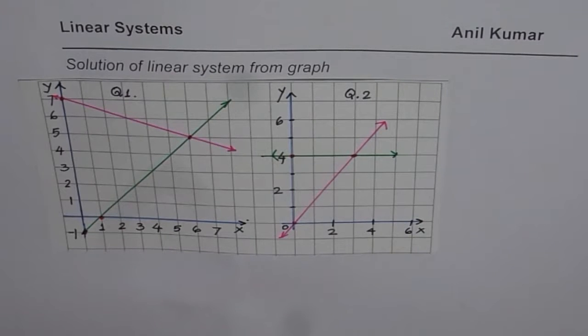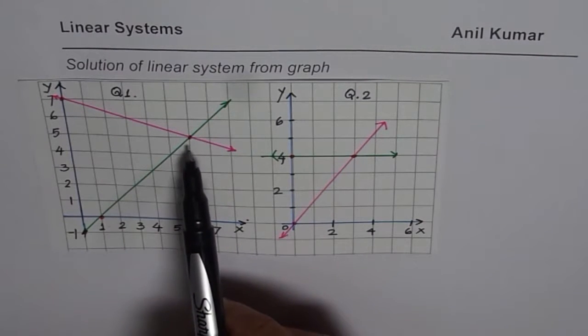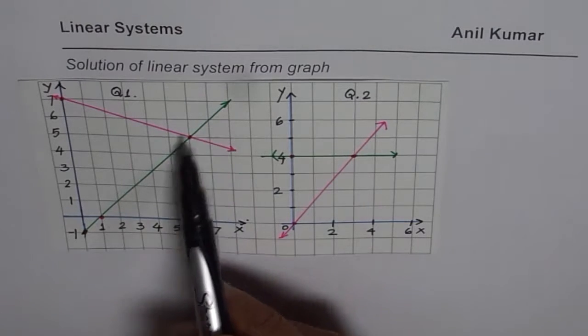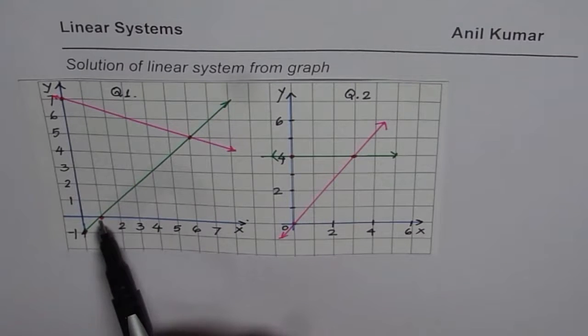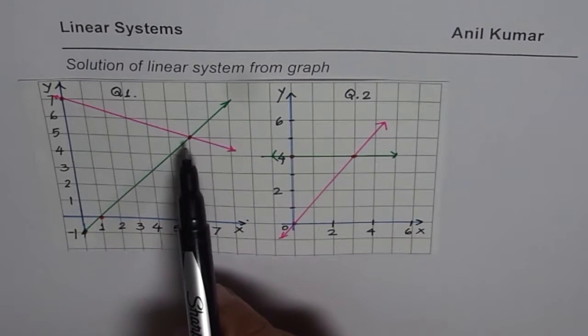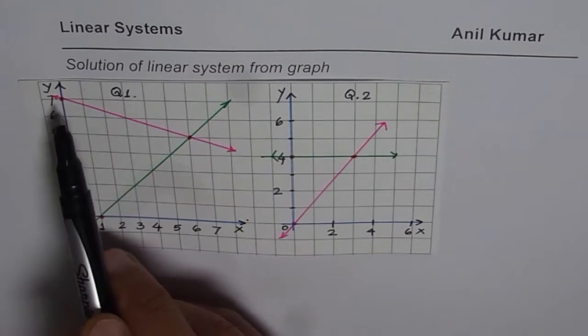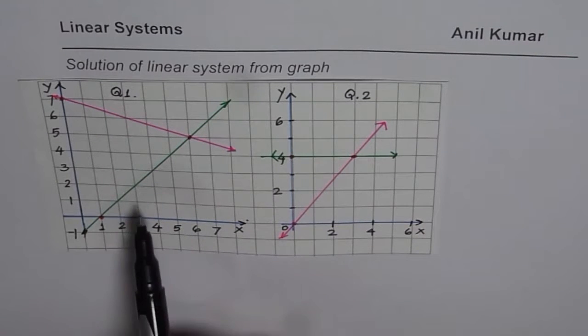You can pause and answer the question. The first one here has two lines rising with y-intercept of minus 1, x-intercept of 1, and the other one going downwards with y-intercept of 7. You need to find solution of this linear system.